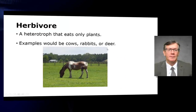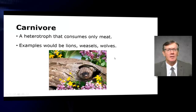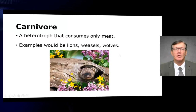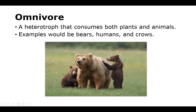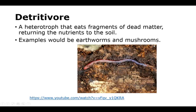Herbivores are heterotrophs that eat only plants — examples include cows, rabbits, and deer. Carnivores are heterotrophs that consume only meat — examples include lions, weasels, and wolves. Omnivores are heterotrophs that consume both plants and animals — examples include bears, humans, and crows. Detritivores are heterotrophs that eat fragments of dead matter, returning nutrients to the soil — examples include earthworms and mushrooms.